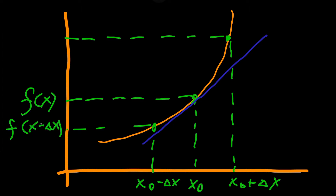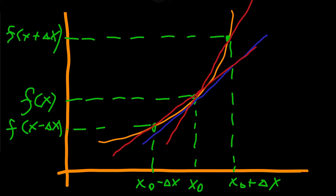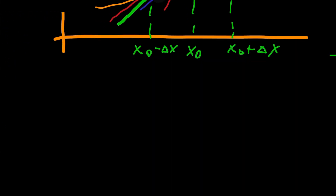Through these points we can draw a few different secant lines. For example, through x0 towards x0 plus delta x; another one through x0 minus delta x towards x0; and finally through x0 minus delta x towards x0 plus delta x.